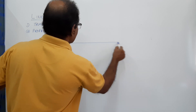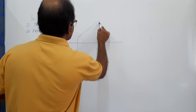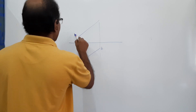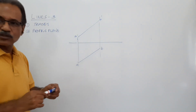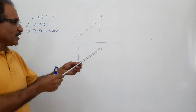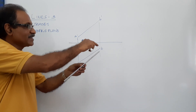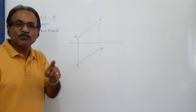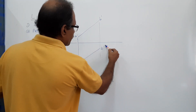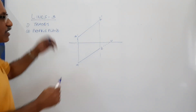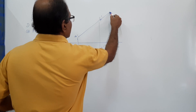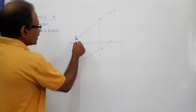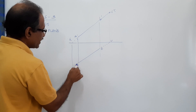Let this be the plan and elevation of a line. To locate the traces: extend the plan — it cuts XY at point v. Draw a vertical line through v and extend the elevation; they meet at VT. Similarly, extend the elevation — it cuts XY at h. Draw a vertical line at h and extend the plan; you get HT.